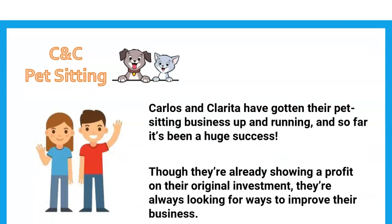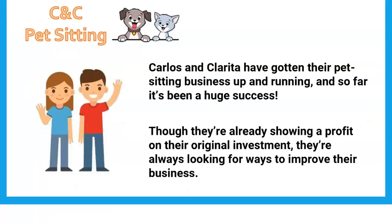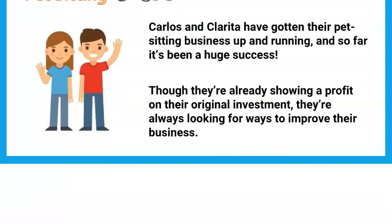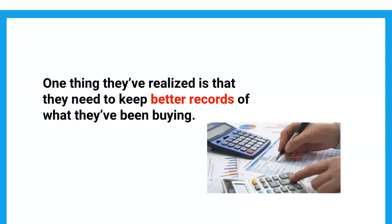So Carlos and Clarita are working on their summer pet sitting business. They've gotten it up and running, and so far it's been a huge success — everyone in the neighborhood wants them to tend their pets while they're away on vacation. And though they're already showing a profit on their original investment, they're always looking for ways to improve. One thing they've realized is that they need to keep better records of what they've been buying, because they discovered they actually needed more information than they'd recorded.